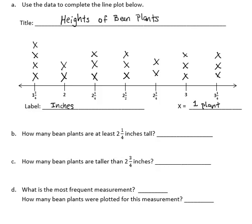In our next section, we'll use our line plot to answer some questions. Question B says, how many bean plants are at least 2 and 1/4 inches tall? So we'll start with the 2 and 1/4 measurement, and we will include that measurement as well as everything to the right of that, because each of those would be at least 2 and 1/4 inches tall. And if we count those up, there are 14 plants that are at least 2 and 1/4 inches tall.